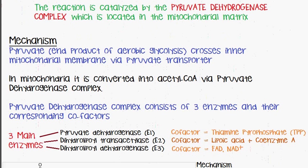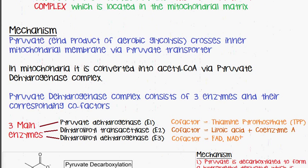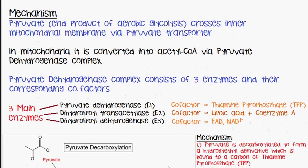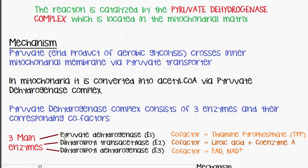The complex itself consists of three enzymes and their corresponding cofactors. The three main enzymes are: pyruvate dehydrogenase, otherwise known as E1, whose cofactor is thiamine pyrophosphate; dihydrolipoyl transacetylase, otherwise known as E2, whose cofactors are lipoic acid and coenzyme A; and dihydrolipoyl dehydrogenase, or E3, whose cofactor is FAD or NAD+.